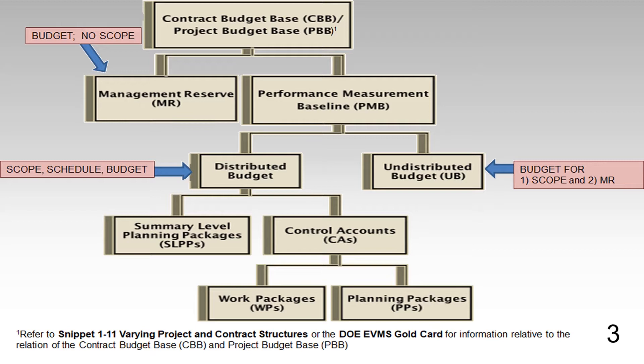Refer to Snippet 111, Varying Project and Contract Structures, or the DOE EVMS Gold Card, for information relative to the relation of the contract budget base, CBB, and project budget base, PBB.